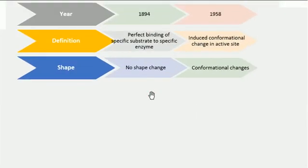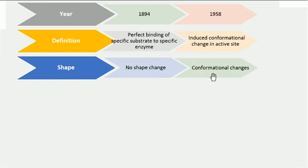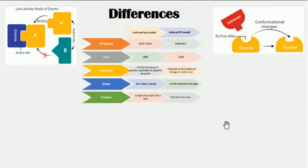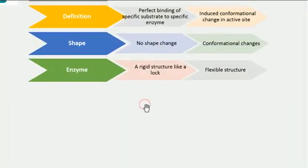Another difference is the shape. According to the Lock-and-Key model, no shape change takes place in the enzyme or in the active site of the enzyme. In contrast, conformational changes do take place according to the Induced Fit model — the active site of the enzyme changes its shape to fit with the substrate.